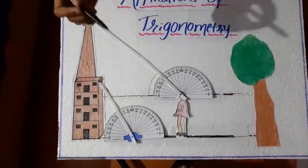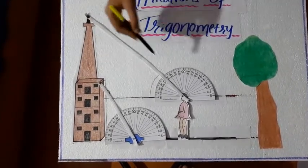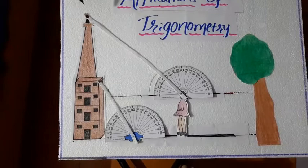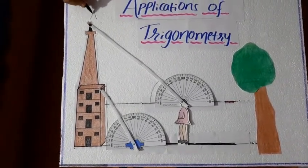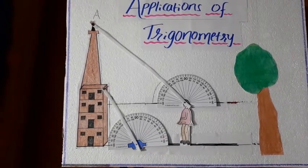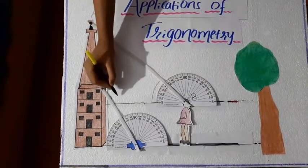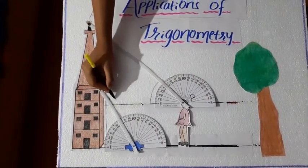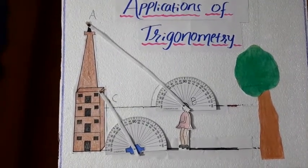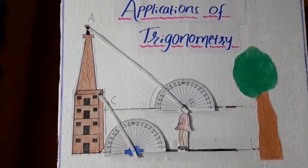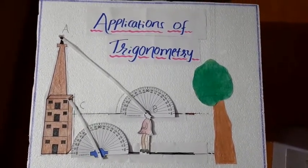So, now, here as we can see, there is a right-angled triangle formed here. And let us name them. Let us name it as A. And this one B. And this one as C.